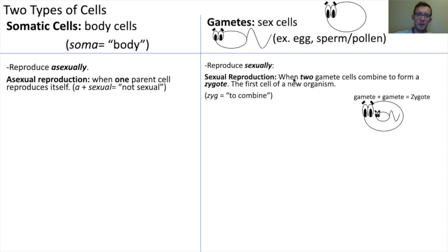Sexual reproduction is when two sex cells — two gametes — combine to form a zygote, or the first cell of a new organism.